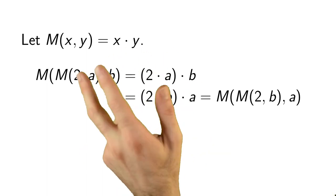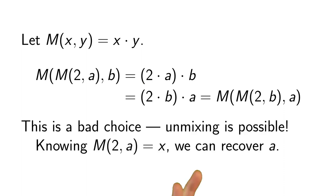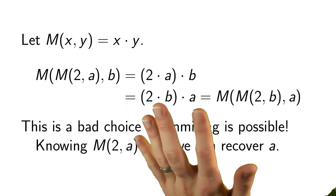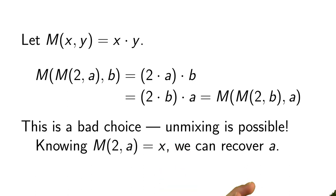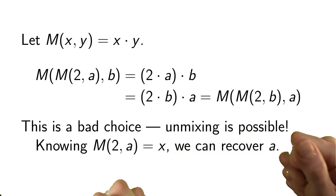But actually, this is a terrible choice of mixing function. Why is it such a bad choice? Well, it's because unmixing is possible. I mean, if Alice picks her secret number A and then reveals the result of mixing 2 with A, reveals X publicly to the room, then when the people in the room hear X, they can just divide in order to recover A, right? One way to say this is that unmixing is possible. And you can't hide a secret by mixing together paint if you can unmix the paint. We need a better technique.